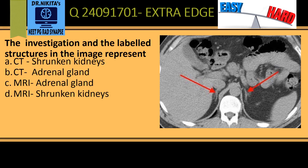To answer this question, the first thing we have to do is identify whether this is a CT or MRI. The trick for that is to first look at the bones. So these are the vertebra, these are the ribs — the bones are looking white. Therefore, this is a CT scan. So option C and option D are automatically ruled out.